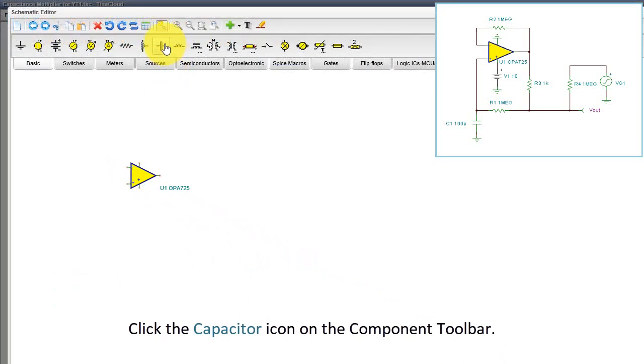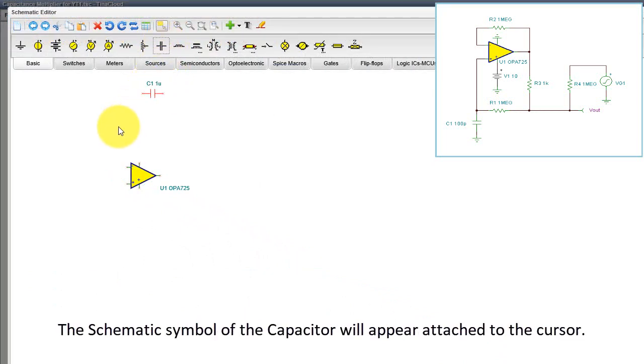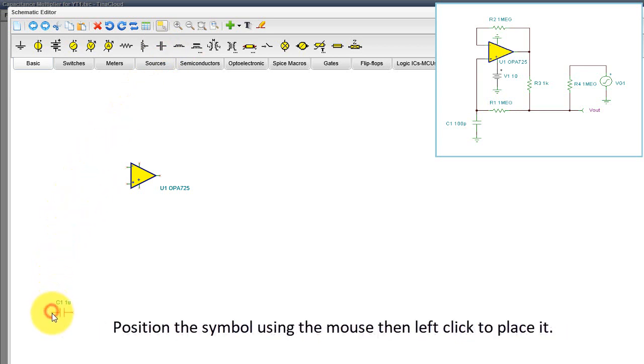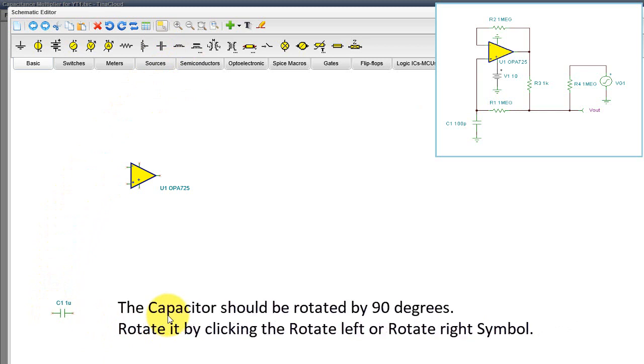Click the capacitor icon on the component toolbar. The schematic symbol of the capacitor will appear attached to the cursor. Position the symbol using the mouse then left click to place it. The capacitor should be rotated by 90 degrees. Rotate it by clicking the Rotate Left or Rotate Right symbol.